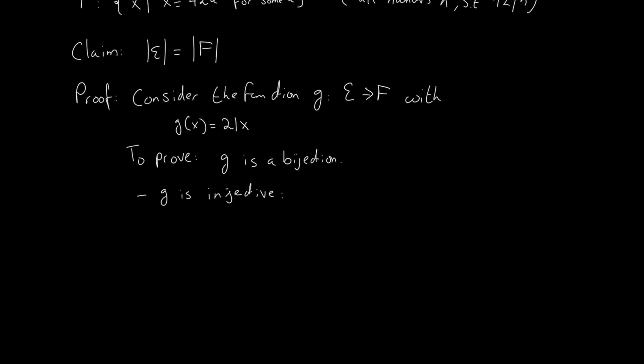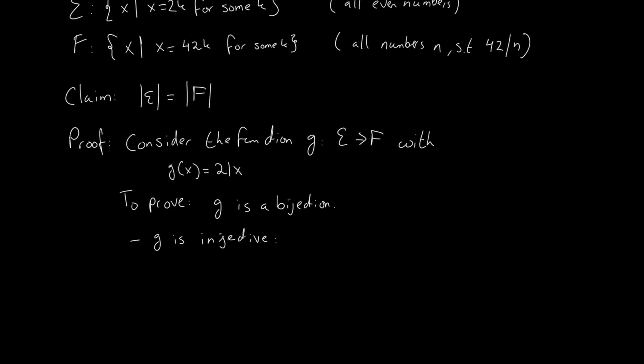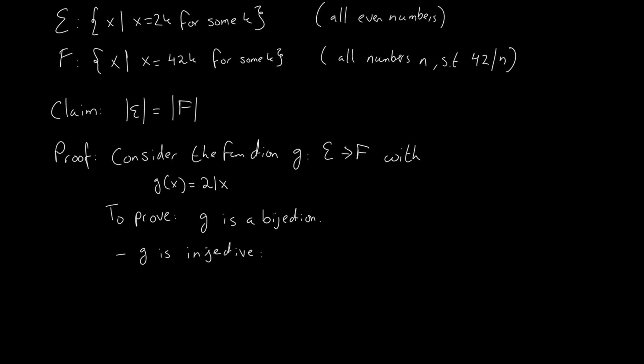So how do we do that? Well if g is a bijection then it must be both injective and surjective. So let's prove both these properties and let's start by proving that g is injective.